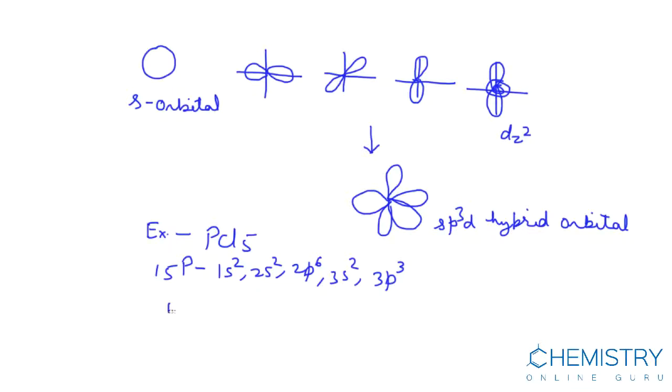Configuration of Cl is 1s2, 2s2, 2p6, 3s2, 3p5.